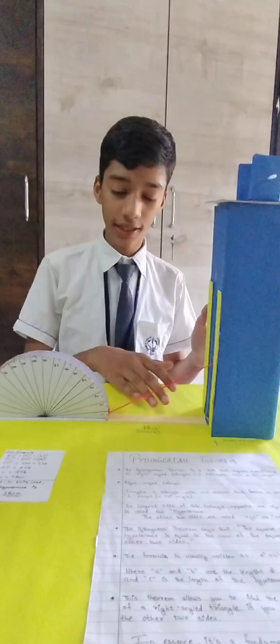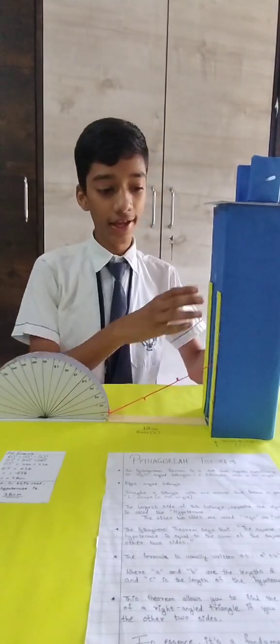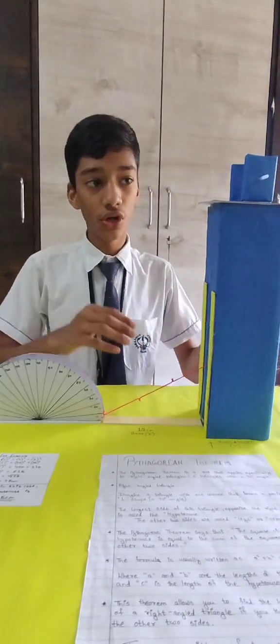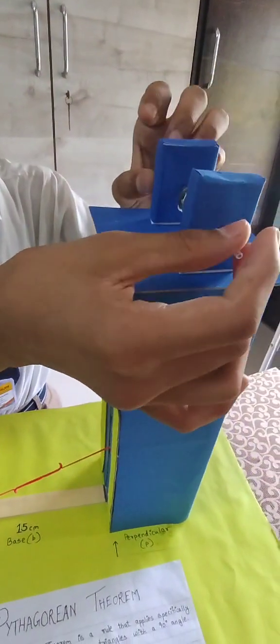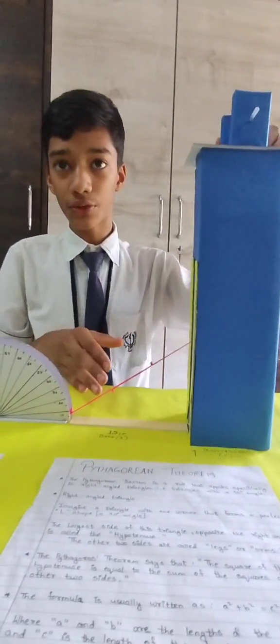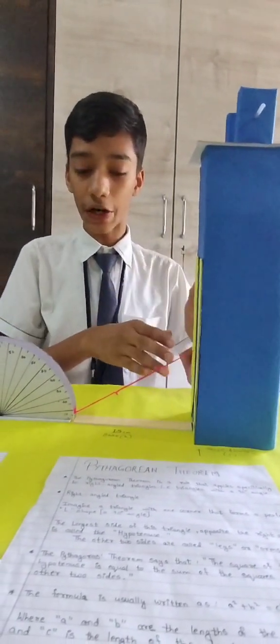So here as you can see, this is a base of 15 cm, this is a perpendicular height of 20 cm, and this rubber acts as the hypotenuse. So from here, if we roll this, we can increase or decrease the length of the hypotenuse and also the perpendicular height.